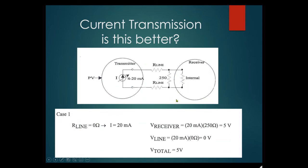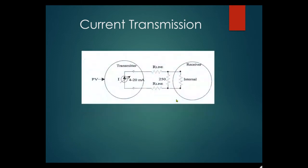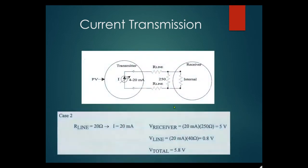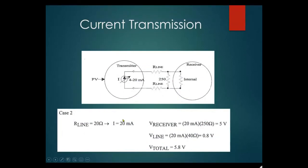Case two: line resistance is 20 ohms, current is 20mA. Voltage across receiver is still 20mA × 250Ω = 5 volts, because the same 20mA flows everywhere in a series circuit. Voltage on the line: 20mA × 40Ω = 0.8 volts. So the total voltage the supply must provide is 5.8 volts. When you check a transmitter's specs, the required transmitter voltage plus loop voltage must be within the supply voltage.